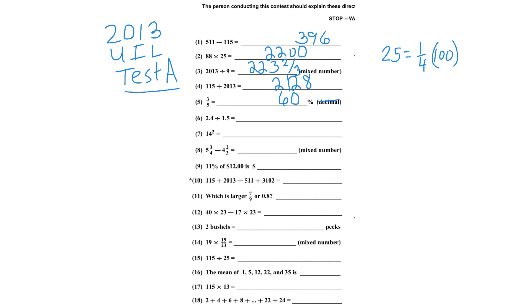Number 6: 2.4 divided by 1.5. I see that as 24 over 15 — multiply numerator and denominator by 10, then reduce by 3, and that gives 8 over 5. Number 7 is 14 squared. 14 times 14 is 196, and you should memorize your squares.